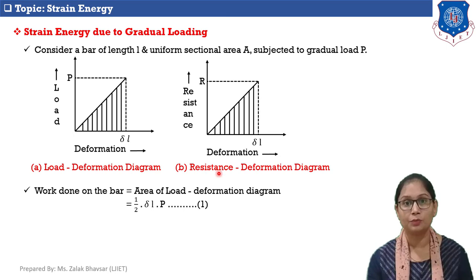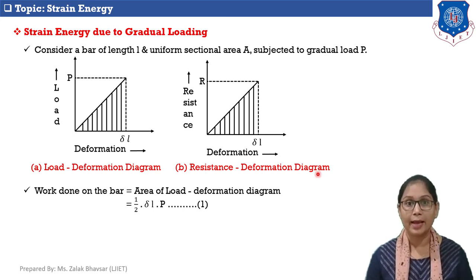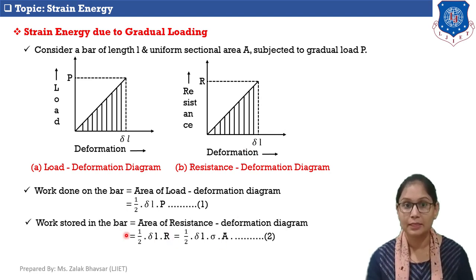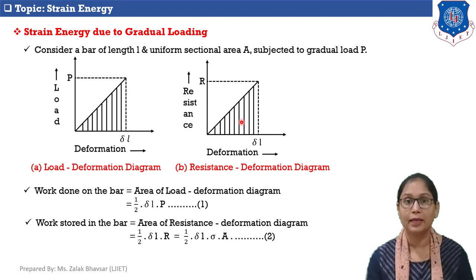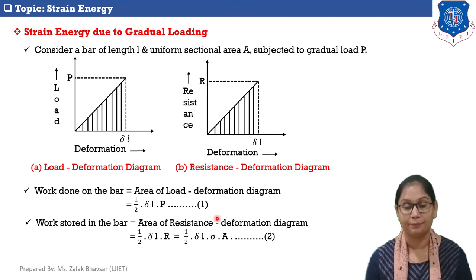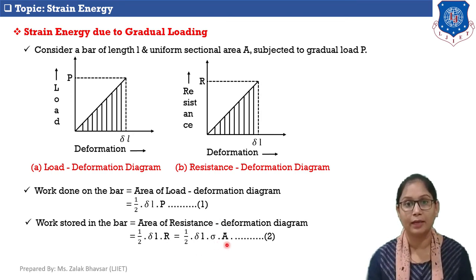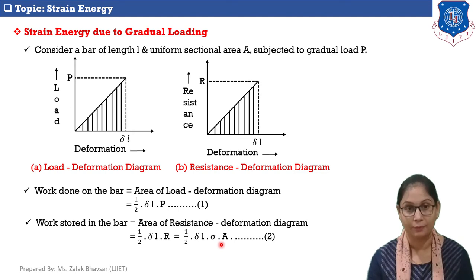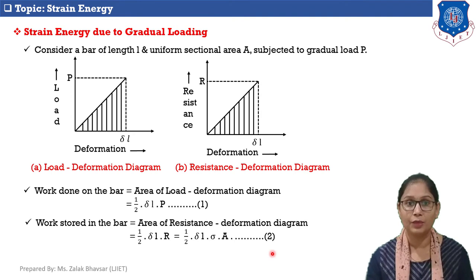Now consider the resistance versus deformation diagram. As deformation increases, resistance also increases. The work stored in the bar equals the area of this triangular diagram: one half into delta L into R. Since stress sigma equals resistance upon area A, resistance equals sigma into A. So work stored equals one half into delta L into sigma into A. This is equation number 2.